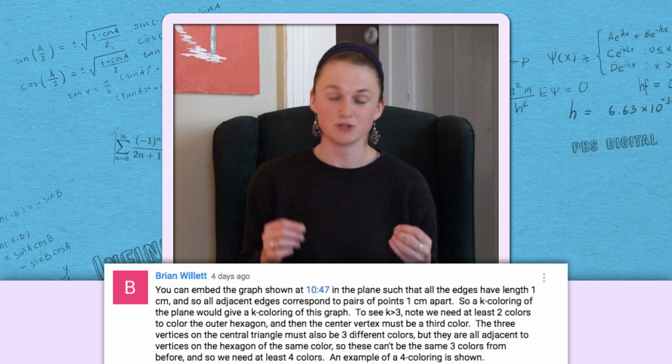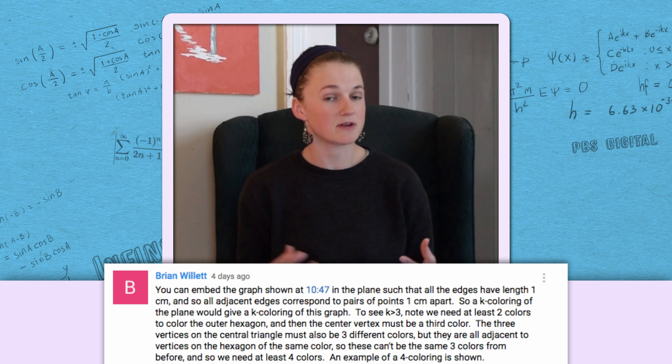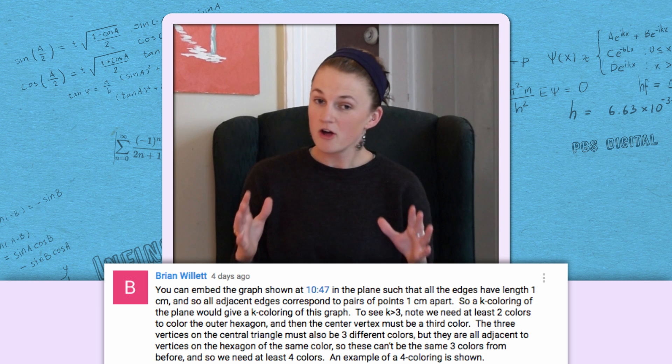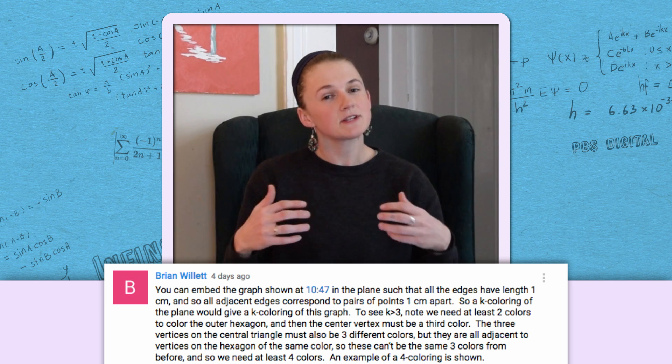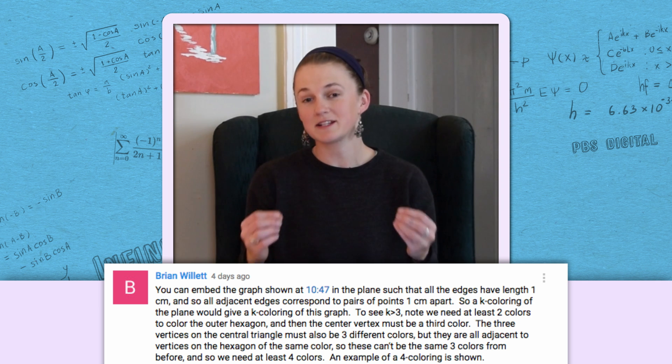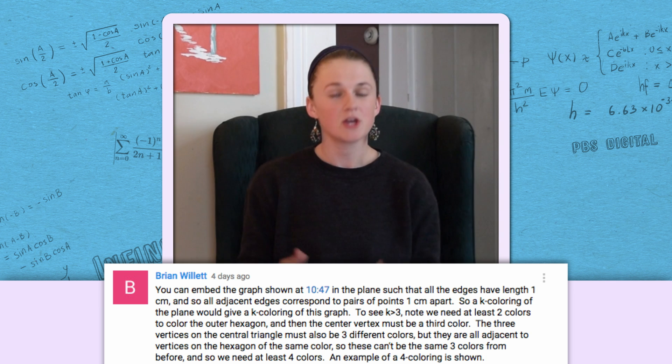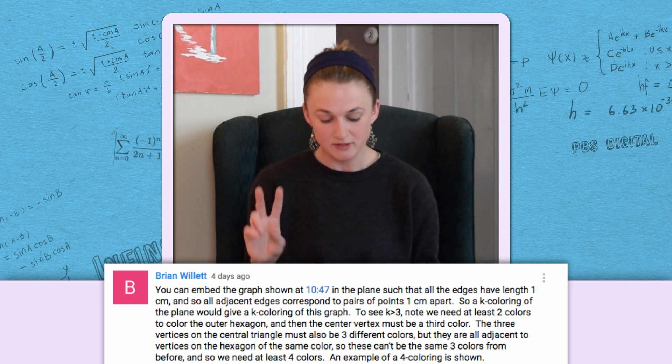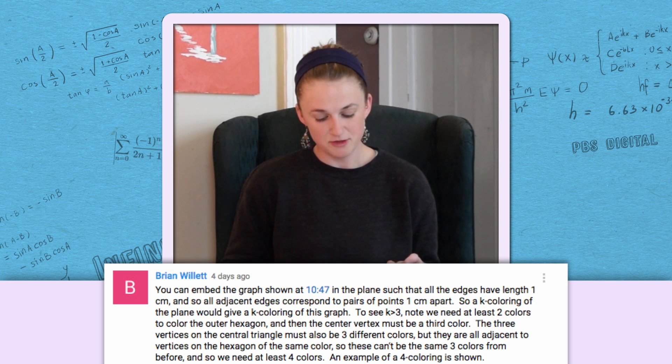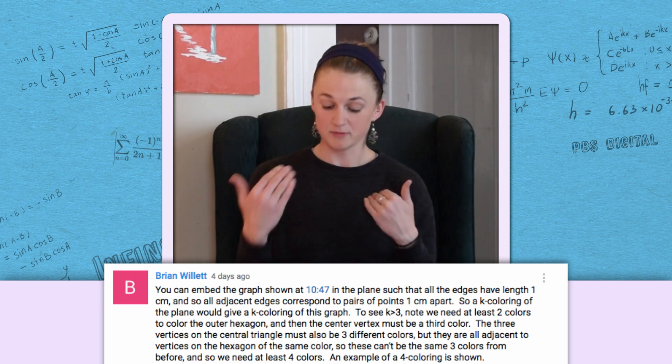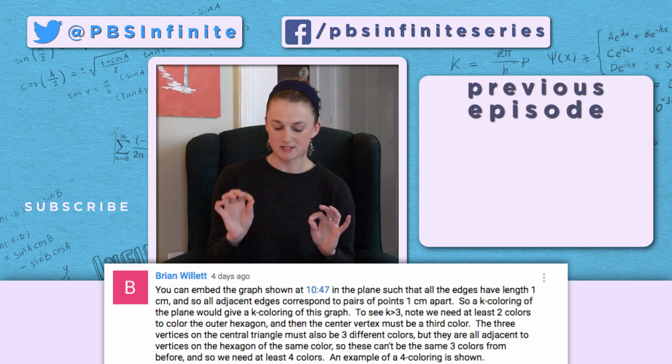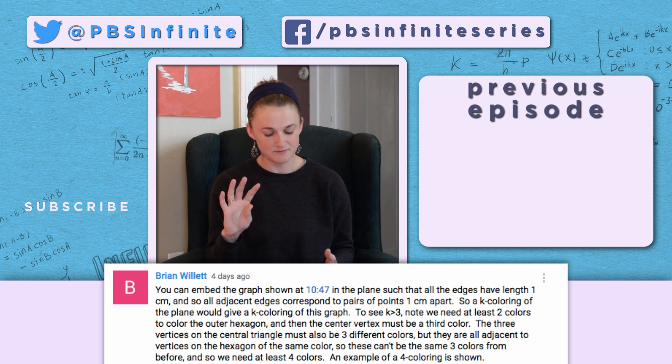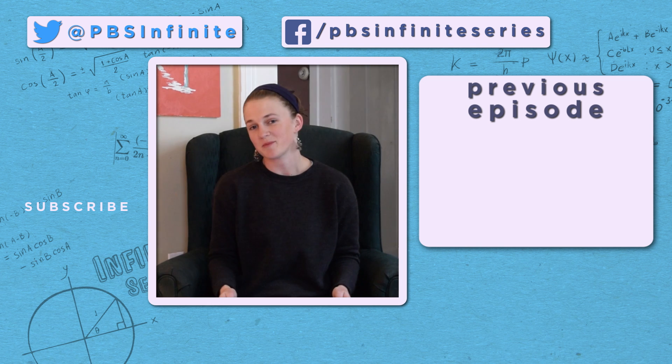Finally, Brian Willett gave a great answer to our challenge question. Why is the lower bound on the chromatic number of the plane 4? Here's his answer. You can embed the graph we showed in the plane such that all edges have length 1 cm. Any coloring of the plane must have a coloring number bigger than the one of the graph. So, to show that the chromatic number of the graph must be bigger than 3, we need to note that it takes at least two colors to color the outer hexagon, and then this center vertex must be a third color. The three vertices of the central triangle must be three different colors, but they are all adjacent to the vertices of the hexagon of the same color. So these can't be the same three colors from before, and so we need at least four colors. An example of a four coloring is shown. Good job, Brian. We'll see you next week.